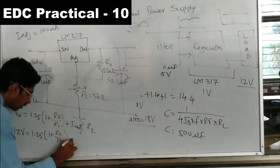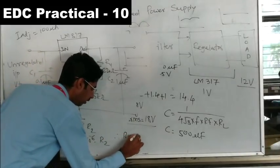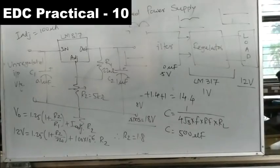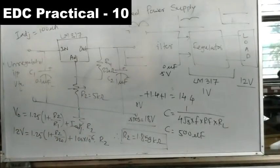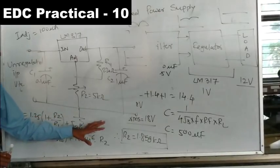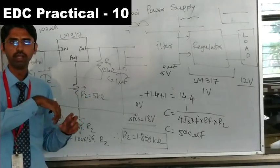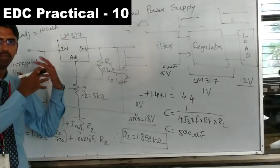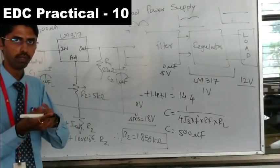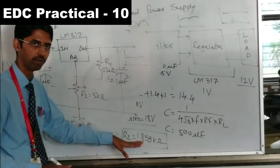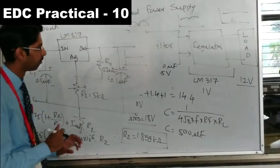To obtain 12V output with R1 = 220Ω and Iadj = 100µA, we solve the formula for R2 and get R2 = 1.859kΩ. We will construct this circuit on a breadboard, vary R2 until the digital multimeter reads 12V, then measure the actual R2 value with the multimeter. This measured value should closely match the theoretical value of 1.859kΩ, which serves as experimental verification.